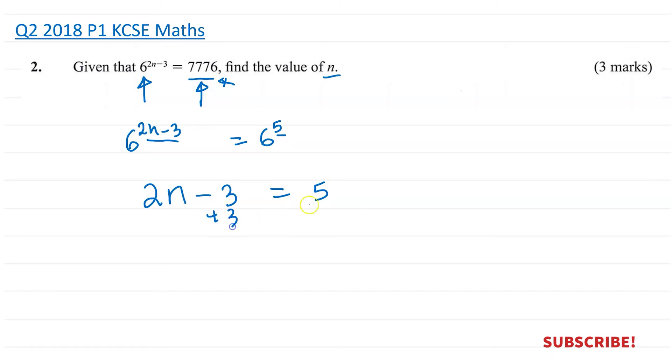Now if we add 3 both sides, what do we have? We have 2n minus 3 plus 3 is 0, equals to 5, plus 3 is 8. If you divide by 2 both sides, you get n is equal to 4.